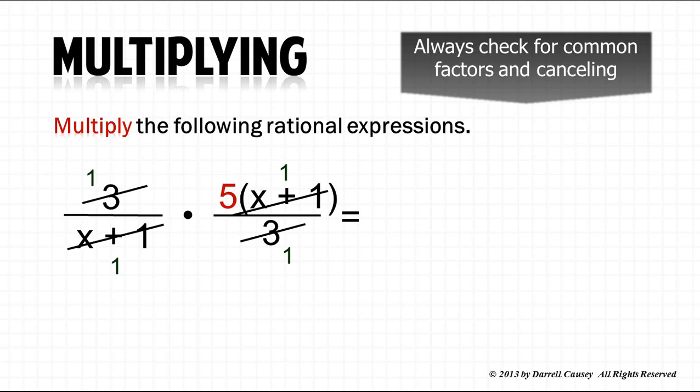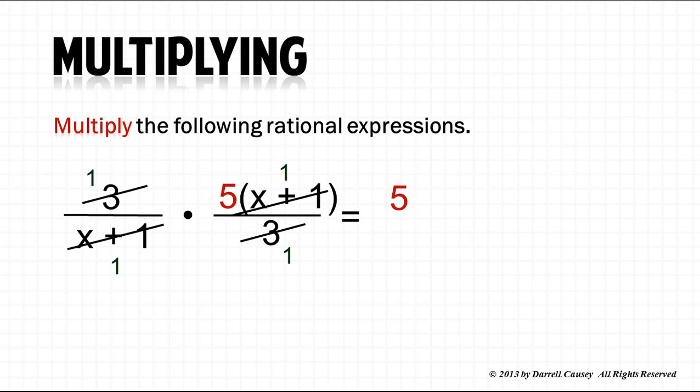So 1 times 5 is 5, and 1 times 1 is 1. Simplify that, and we get 5. It's really just that simple.